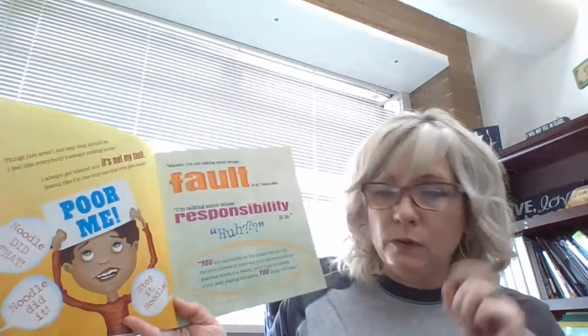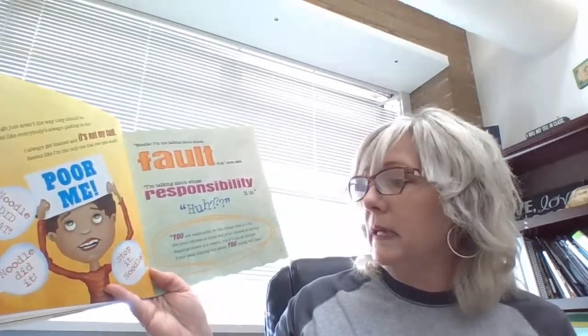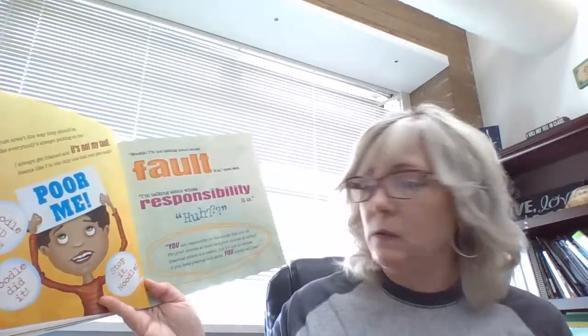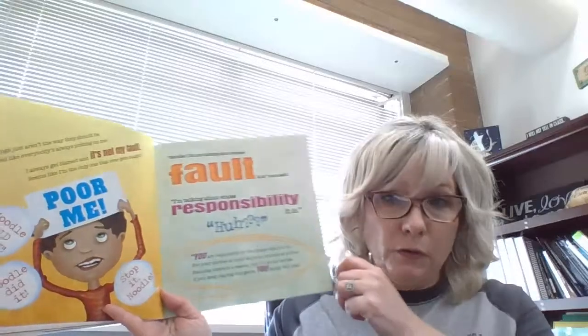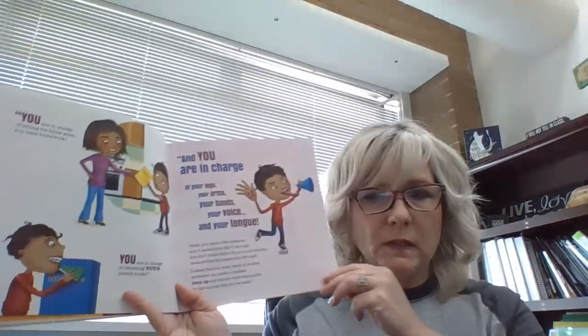You are responsible for the things that you do. For your choices at home and your choices at school. Blaming others is a reason, but it's not an excuse. If you keep playing this game, you will surely lose. You are in charge of letting me know when you have homework. You are in charge of returning your library books. And you are in charge of your legs, your arms, your hands, your voice, and your tongue. Today, you made a few mistakes, and it caused your day to be rough. But don't blame others for your poor choices, because that will make your life rough. Instead, focus on what needs to be done whenever you make a mistake. Own up and become more responsible for the choices that you make.